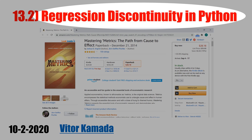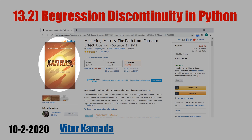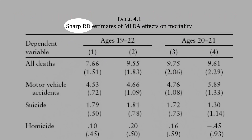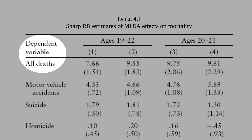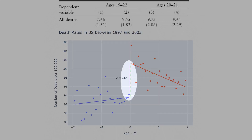In this video, let's see an example of regression discontinuity in Python. We'll look at Chapter 4 of Mastering Metrics. This table shows the sharp regression discontinuity estimates of the minimum legal drinking age effects on mortality. The dependent variable is all deaths — the mortality rate — and the sample is Americans aged 19 to 22 years old. The fact that you are legally allowed to drink alcohol after 21 years old kills 7.6 more Americans per 100,000 people. 7.6 is this green dashed vertical line.